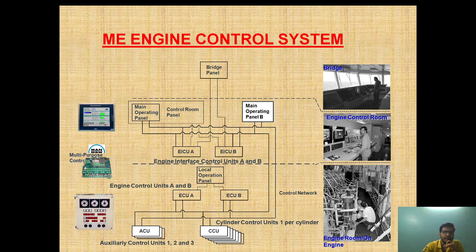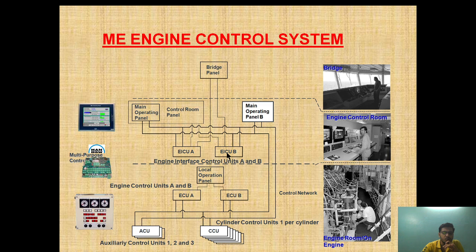As you can see, this is the flowchart diagram of the main engine control system. Suppose a signal of dead slow ahead is given from the bridge — what will happen after that? It will come down to the engine control room, where it will go to main operating panel A or main operating panel B, and after that it will go to EICU A or EICU B. Only one of them will be functioning and the other will be on standby. From EICU it will go to ECU A or ECU B, and from ECU it will go to the individual cylinder unit.